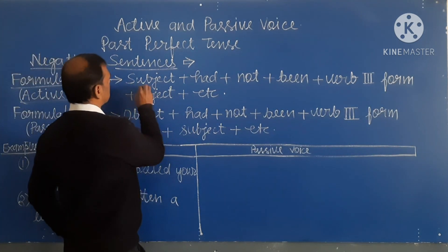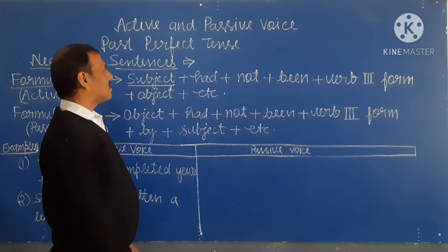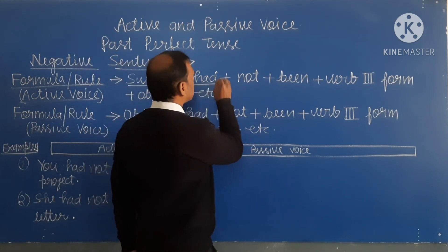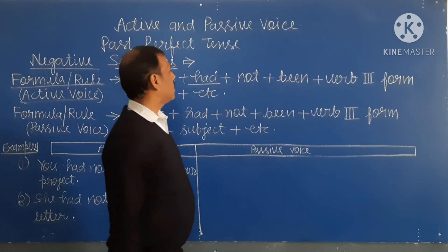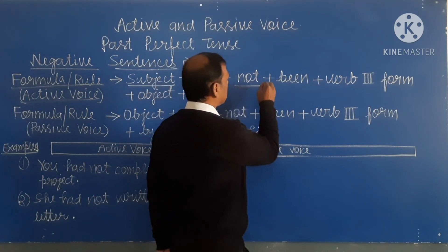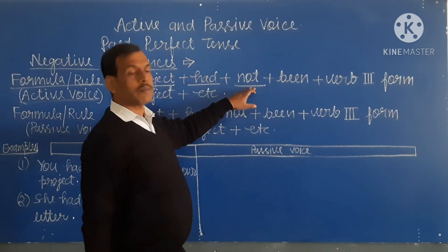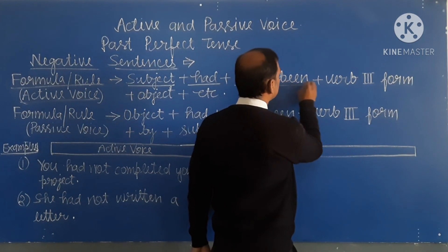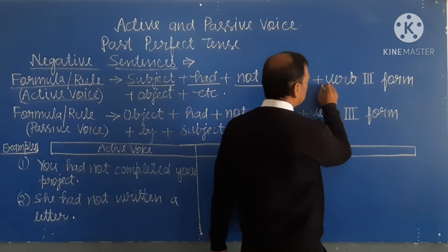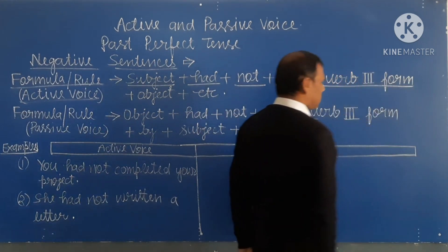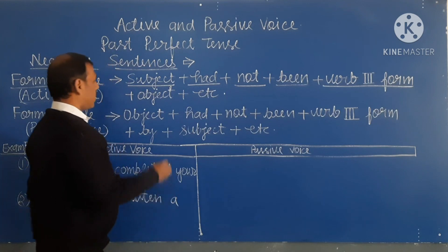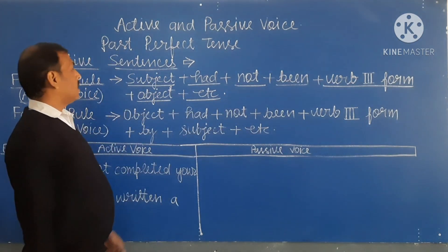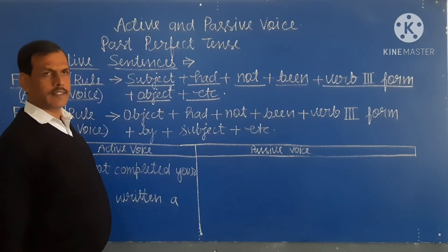In the negative sentence active voice formula, first of all we write the subject. After the subject, we write 'had'. Because it is a negative sentence, after 'had' we write 'not', then 'been', then the verb in third form, then the object, and other details. This is the formula of the active voice for negative sentences.